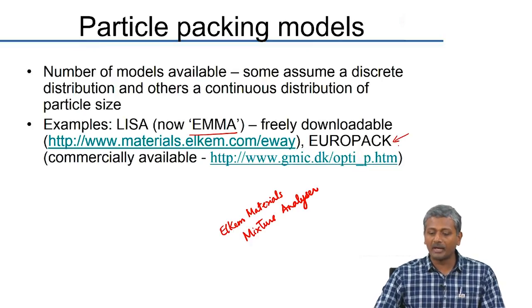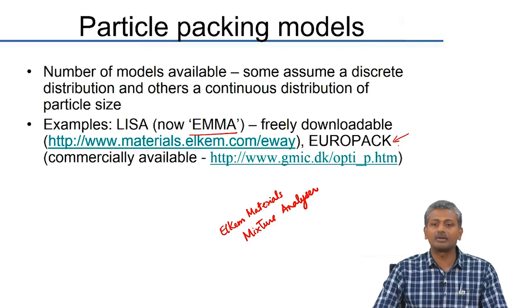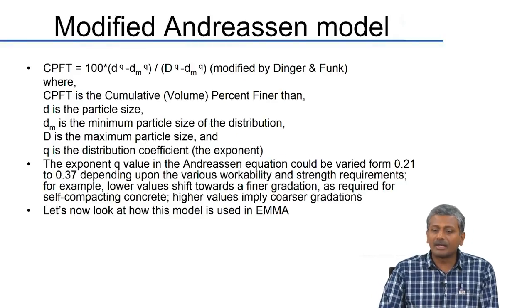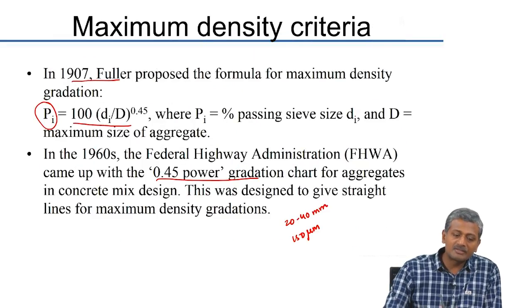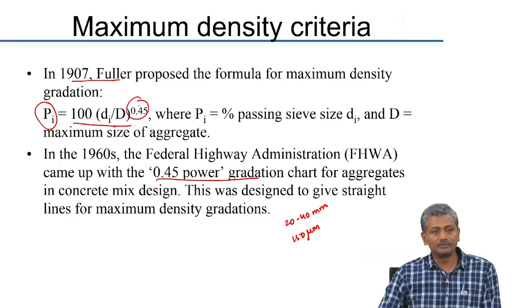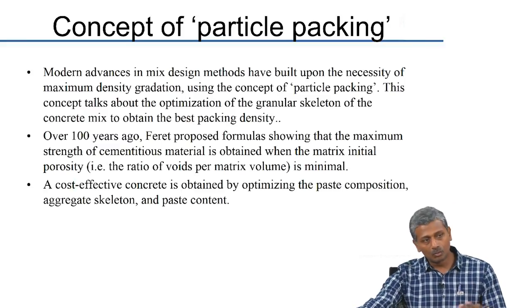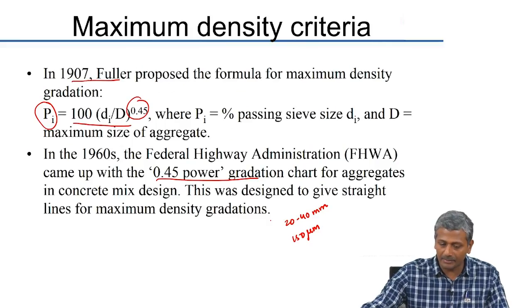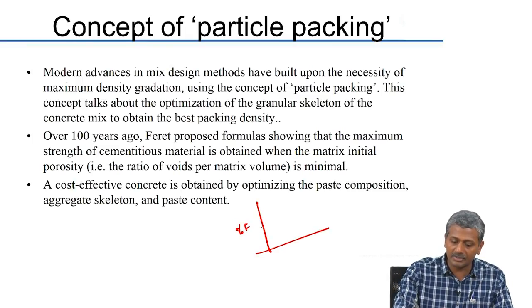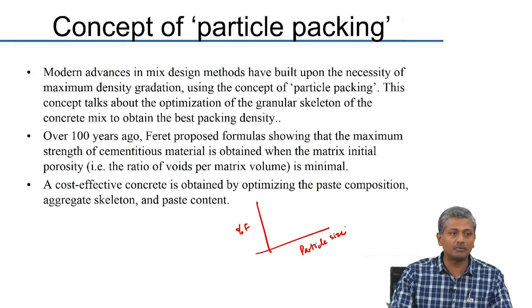EMA modifies the previous equation — the maximum density gradation based on the 0.45 power rule. The new design models modify this exponent 0.45 to more suitable values to bring in a larger range of particle sizes. When you plot your particle size distribution diagram — percentage finer versus particle size — the typical shape for a well-graded system is an S-shaped curve. When you start spreading to smaller and smaller particle sizes, this curve should increasingly shift in that direction because there is more range of particle sizes available.